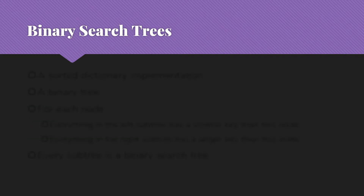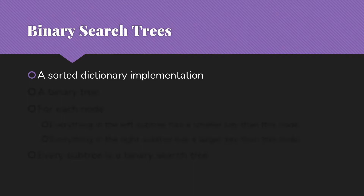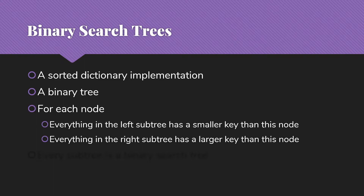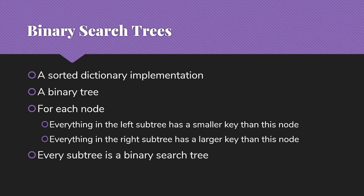Binary search trees are one of our implementations for a sorted dictionary. A binary search tree is, first of all, a binary tree. And in that tree, for each node, everything in the left subtree has a smaller key than the node's key, and everything in the right subtree has a larger key than that node. In addition, every subtree is a binary search tree.